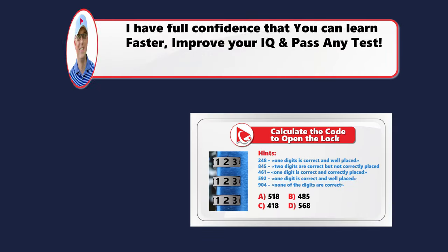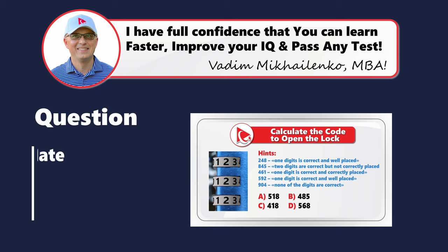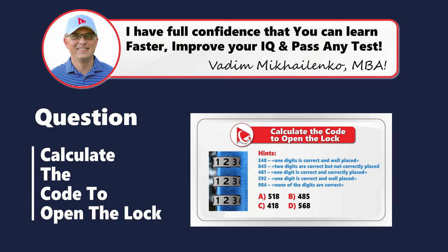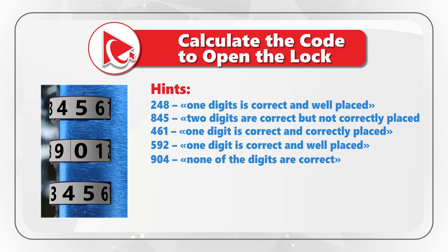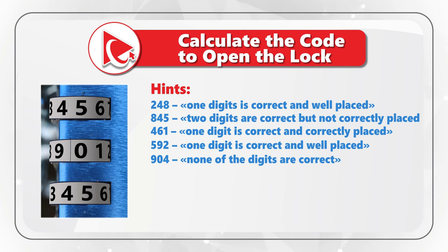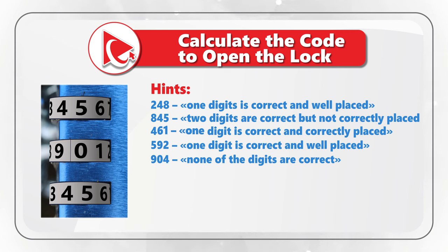Here's a challenging problem — by solving it you will boost your cognitive abilities. You're presented with five hints and using these hints you need to unlock the code and open the lock. The hints are: in the digits 248, only one digit is correct and well placed. In the digits 845, two digits are correct but not correctly placed. In the digits 461, only one digit is correct and it is correctly placed.